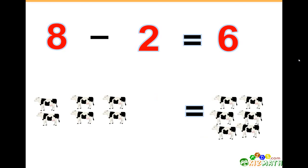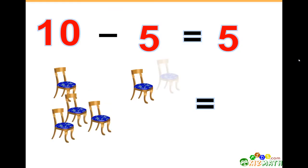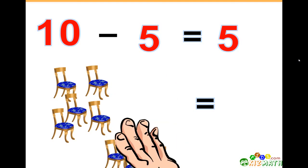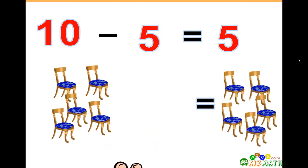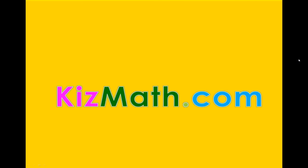10 minus 5 equals 5. We have 10 chairs, and if we take away five of those chairs, we only have five chairs left. And that's the end of the lesson.